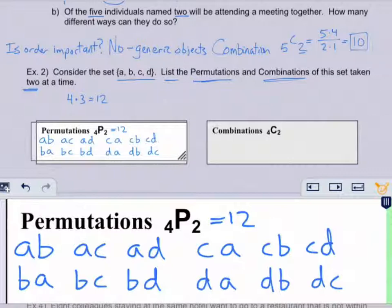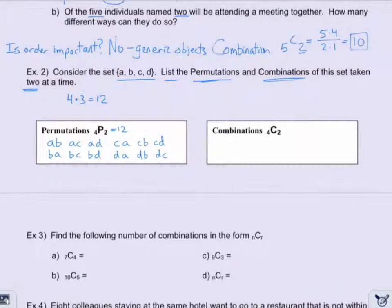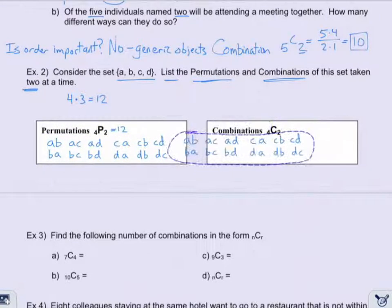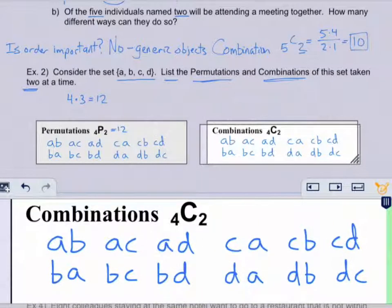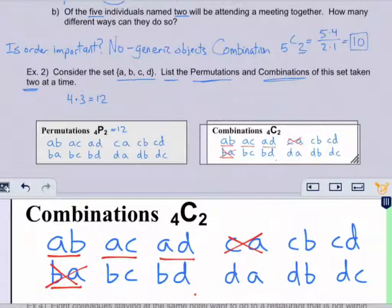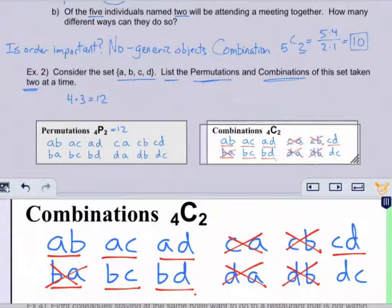When we list the combinations, we can't include duplicates because order doesn't matter. So I'm going to take all these permutations and get rid of any that don't count as a different combination. AB and BA are really the same combination, so I keep AB and discard BA. I keep AC but get rid of CA; keep AD but get rid of DA; keep BC but CB is not different; keep BD but DB is not different; keep CD and get rid of DC.